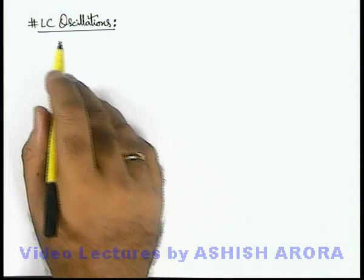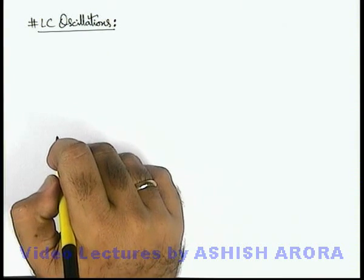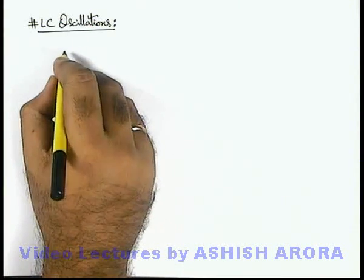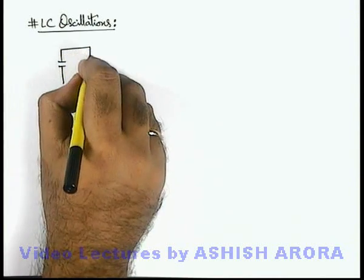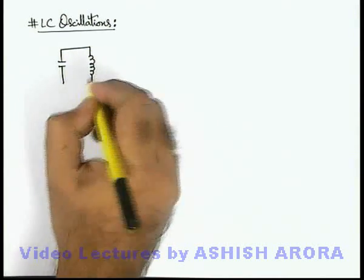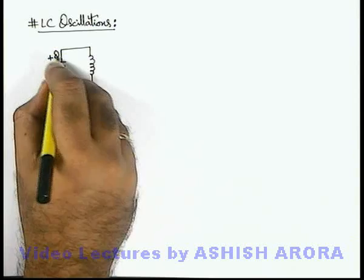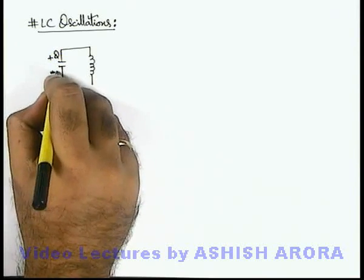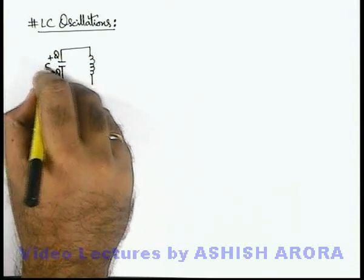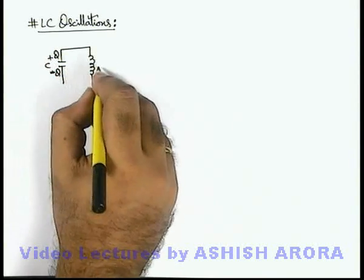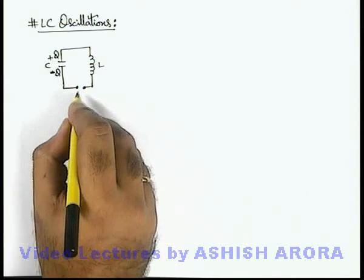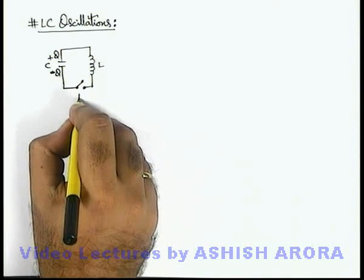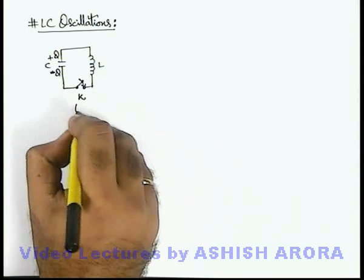Let us now start with an important topic of LC oscillations. In this topic we'll study that whenever a charged capacitor is connected across an inductor — where the charge on the capacitor is q, the capacitance is C, and the inductor has self-inductance L — and at t equal to zero the key is closed.